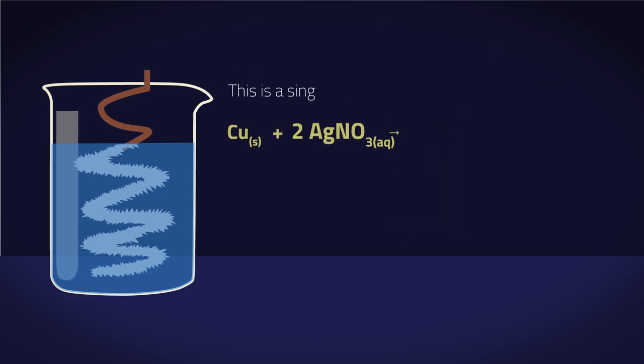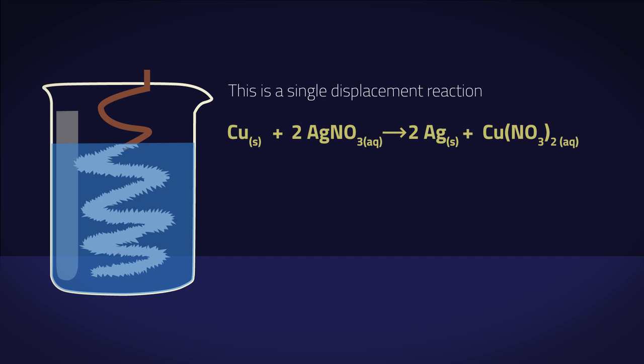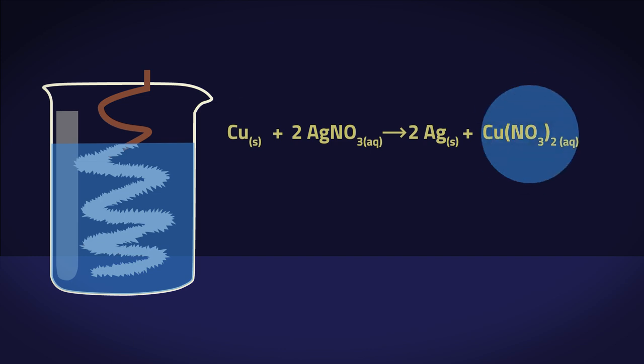This is a single displacement reaction. Copper metal, which is higher on the reactivity series, has displaced silver in silver nitrate. The solution has turned blue because of the copper two ions in the solution. This is also a redox reaction where a reduction and an oxidation are occurring simultaneously, hence the term redox.